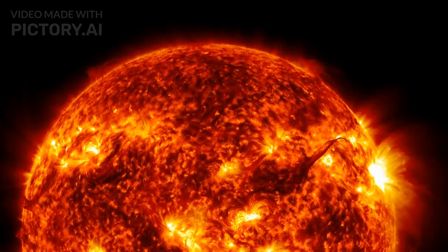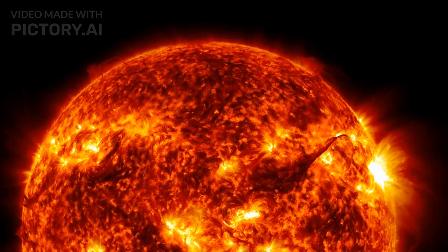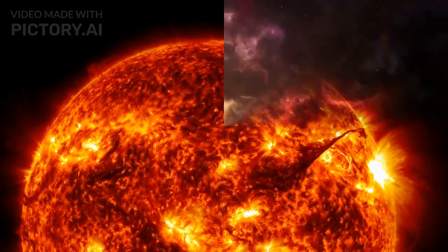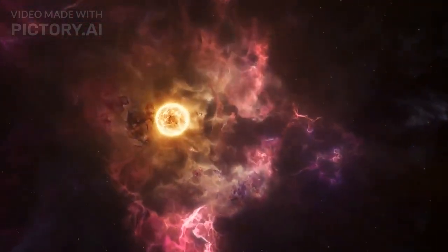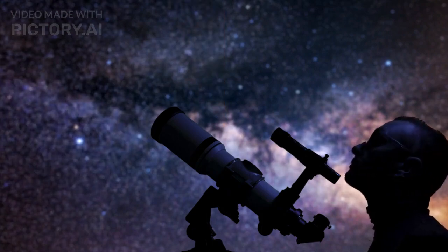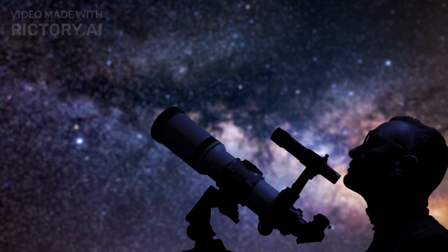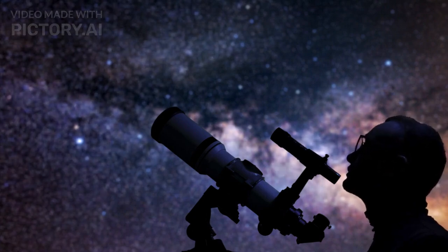One of these is Betelgeuse, a bright reddish star marking Orion's shoulder. Betelgeuse is a red supergiant, a star nearing the end of its life. Its massive size and brilliant luminosity make it a captivating object for both astronomers and stargazers.